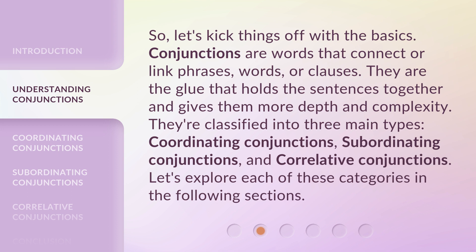They're classified into three main types: coordinating conjunctions, subordinating conjunctions, and correlative conjunctions. Let's explore each of these categories in the following sections.